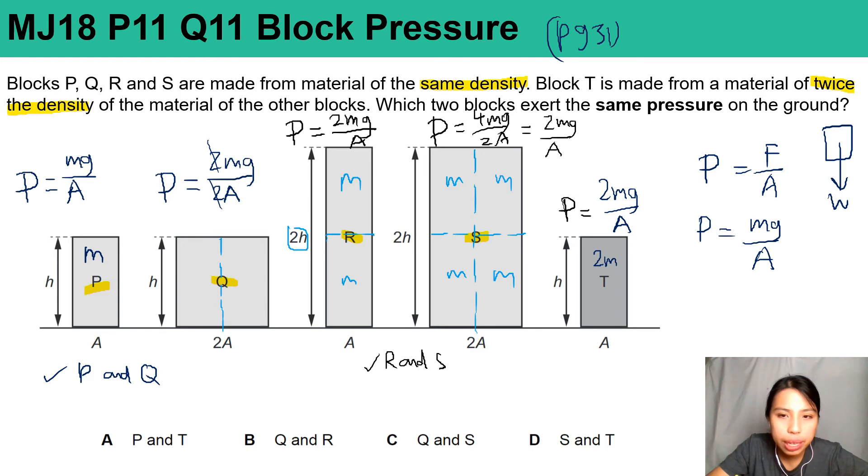Now let's check through the answers and see what is similar. A, they say P and T - not the same. B, Q and R - nope. C, Q and S - mg over A, nope.